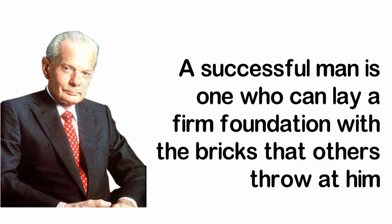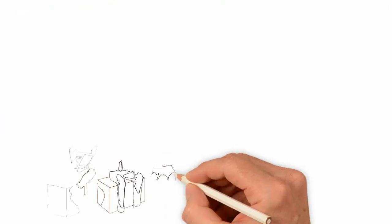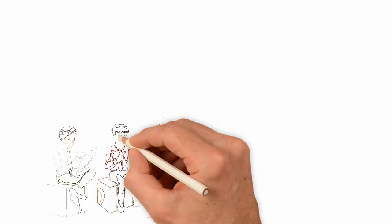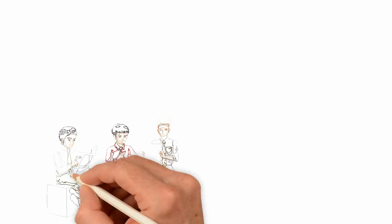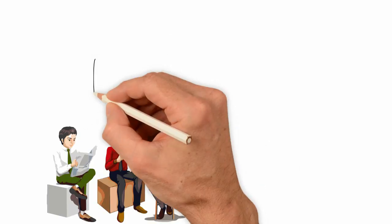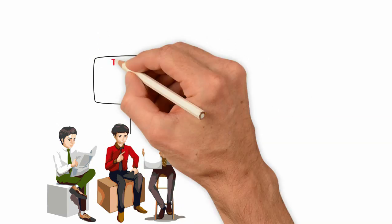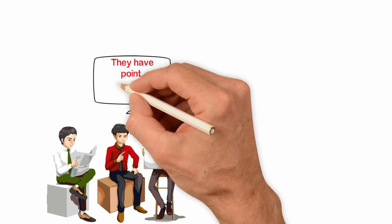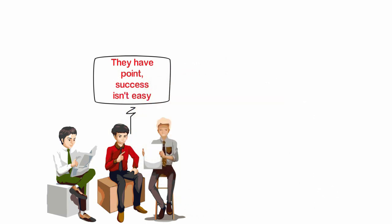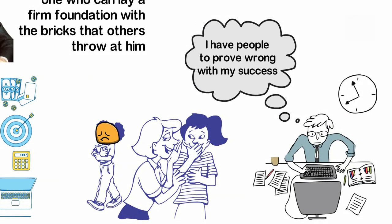What most people do is to allow the bricks others throw at them to cause them injuries. What most people do is to believe that what others say about them is the truth. What most people do is to allow the negativism around them to get into them. The opposite of this is what successful people do. Successful people simply use the negativism around them as a stepping stone.